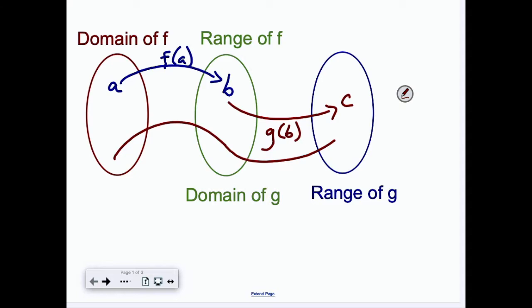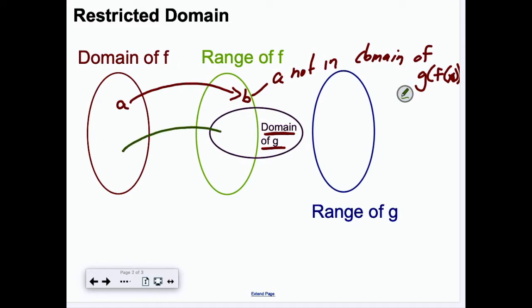Now what we're going to check out today is a restricted domain. Now this is what's happening here. I can have some element A go over here to the range, but unless this element is actually in the domain of G, I can't do anything with it. We can't complete our composite function. It just doesn't work. So here, this means A not in domain of g(f(a)) or g(f(x)). We need a very specific idea here. We would need something that goes from here into the domain and then from the domain over here.